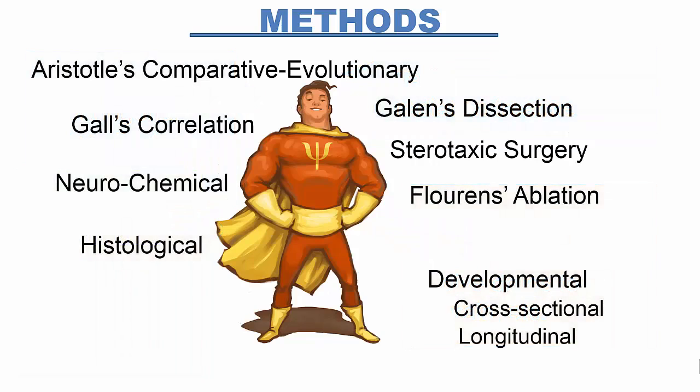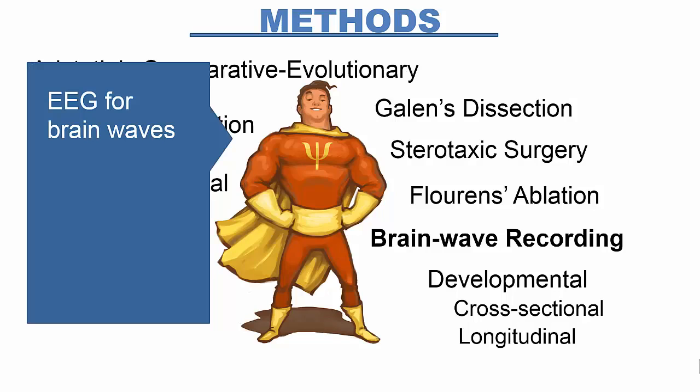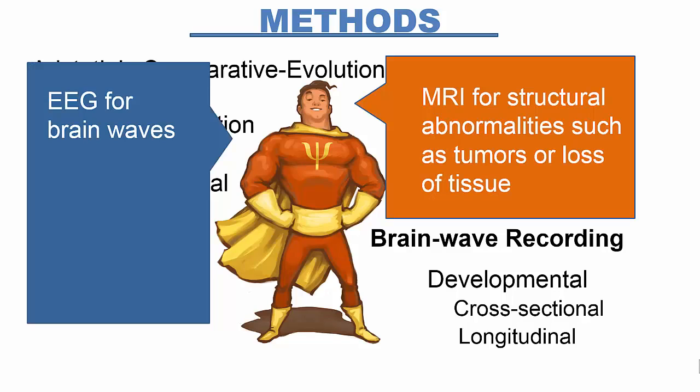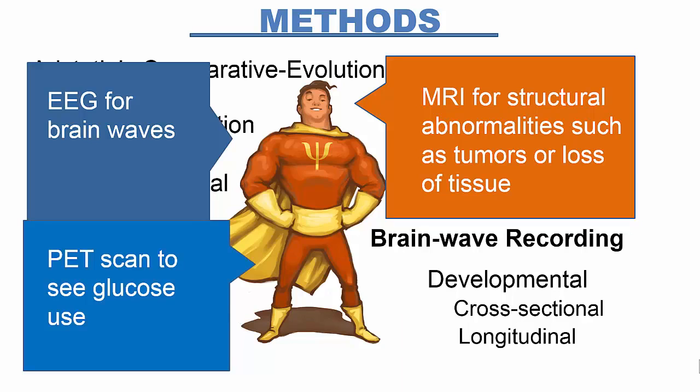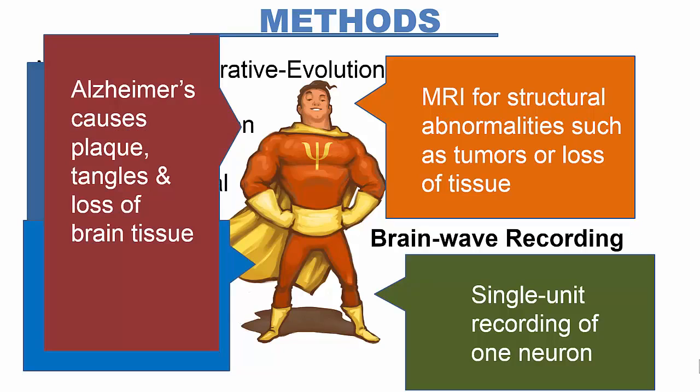Brain recording includes recording the electrical waves with the electroencephalograph, neuroimaging with magnetic resonance, and other techniques. Brain imagery is used for structural exploration — hunting for a tumor — and functional explanations, such as what part of the brain is being used now. Both are valuable for identifying damaged regions from Alzheimer's disease and strokes.